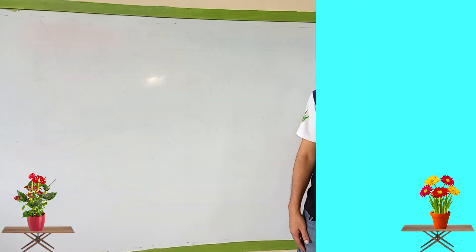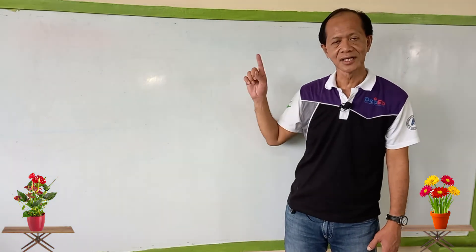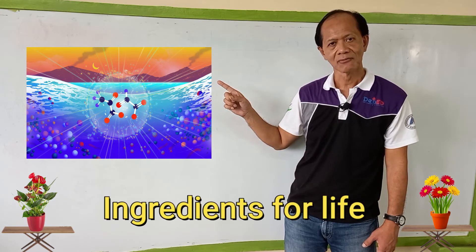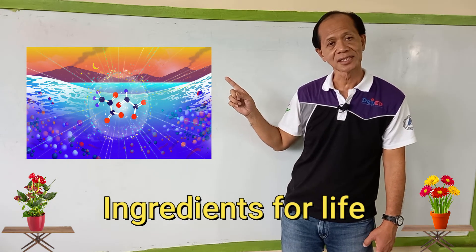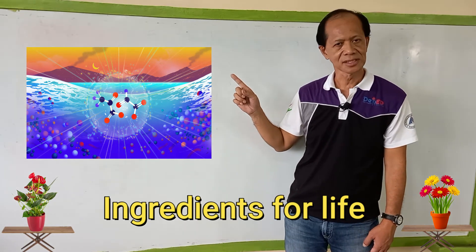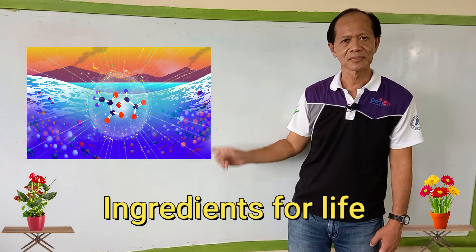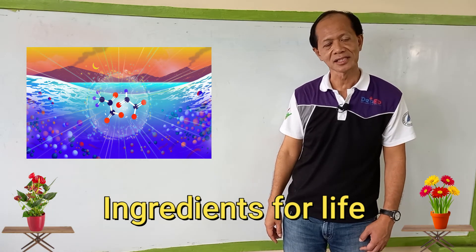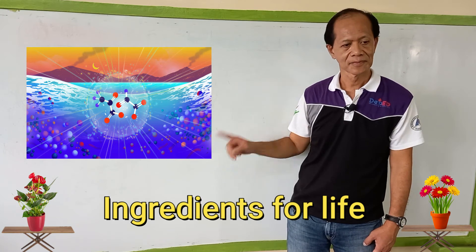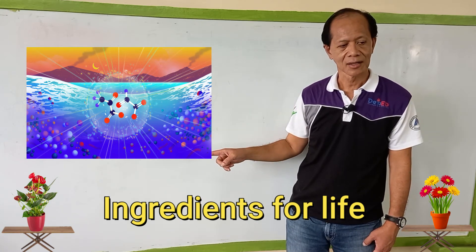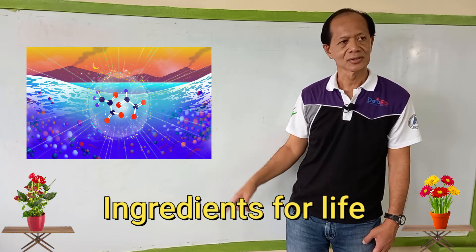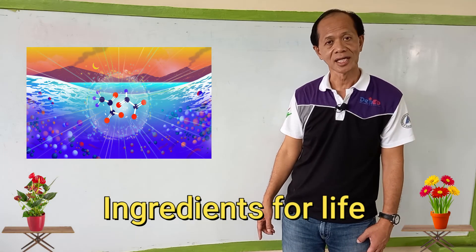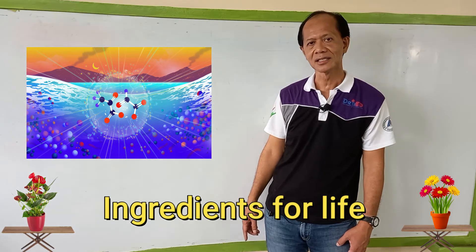Number five: Earth has the right amount of ingredients for life. When we say ingredients for life, these are the elements or substances needed for life. Two examples of these elements are carbon and water — all living things are made up of carbon and water and other ingredients.